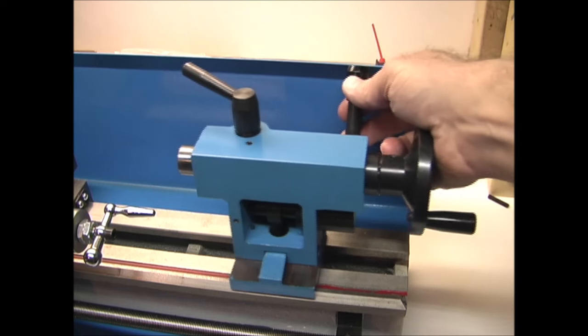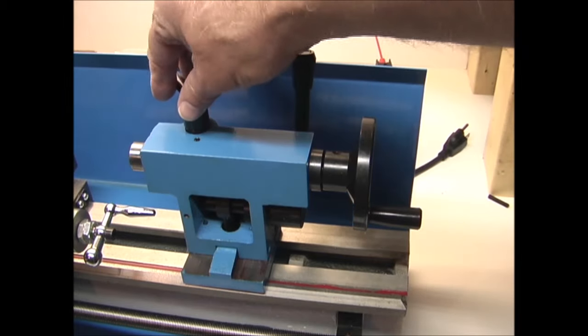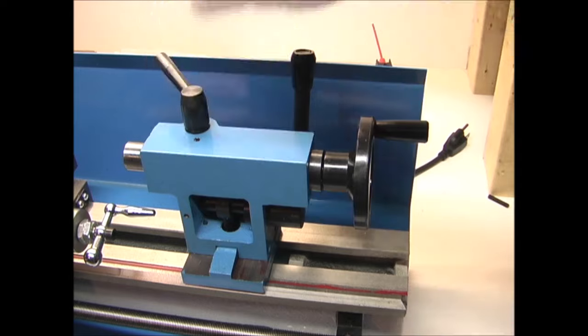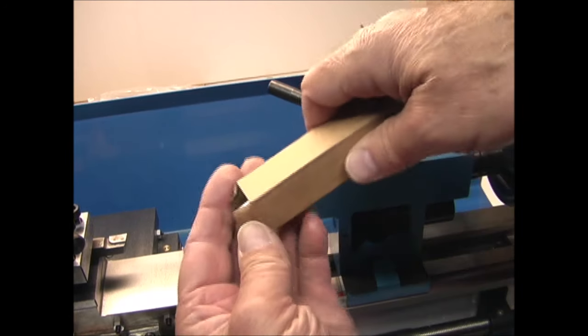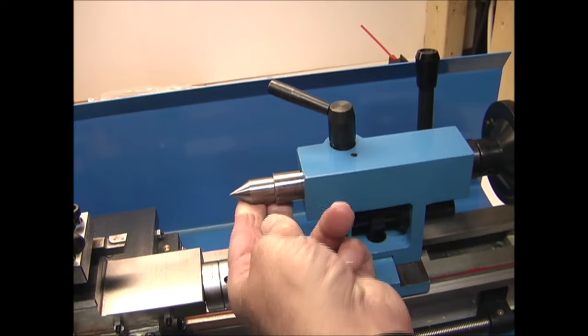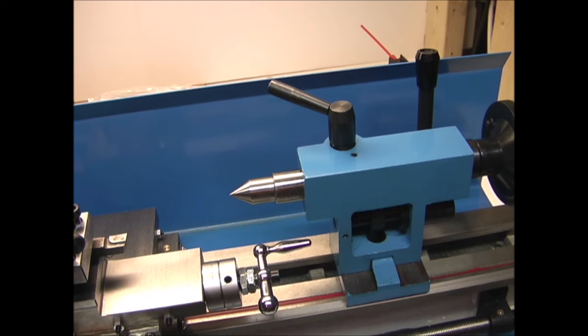The tailstock does have a lock on it, you can move that, adjust it, lock that, and there's also a lock for the quill. The lathe did come with the center for the tailstock and this is an MT2 morse taper on the tailstock.